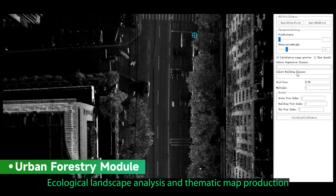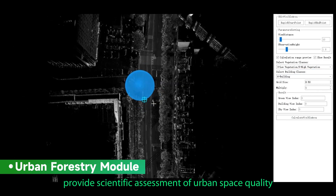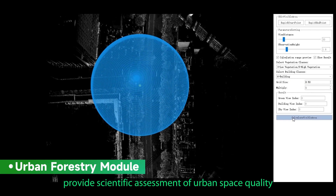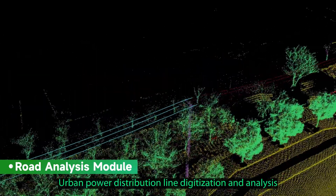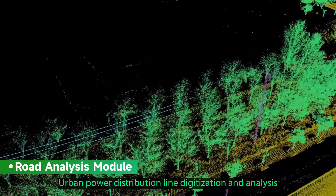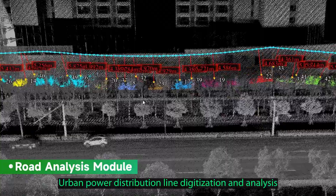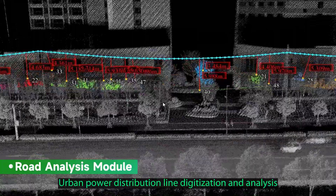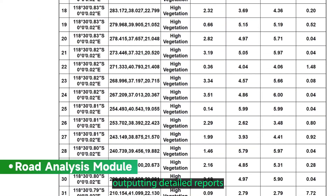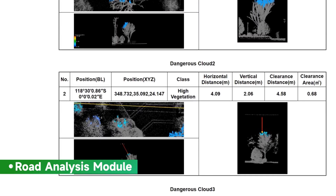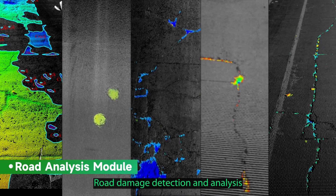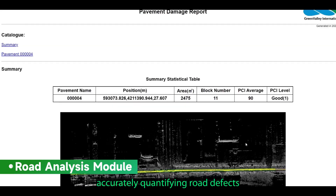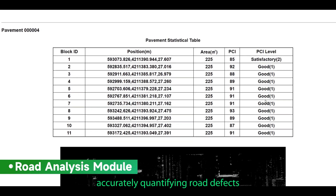Urban forestry survey enables fine-grained management of each tree, ecological landscape analysis, and thematic map production, providing scientific assessment of urban space quality. Urban power distribution line digitization and analysis outputs detailed reports, while road damage detection and analysis accurately quantifies road defects.